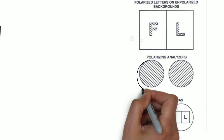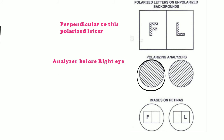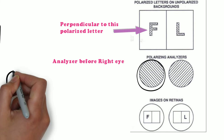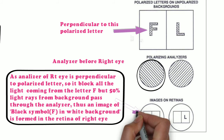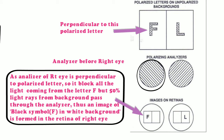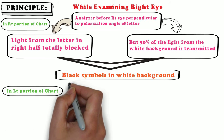Here in this figure, the analyzer before the right eye is perpendicular to the polarized letter F. Since the analyzer of the right eye is perpendicular to the polarized letter, it blocks all the light coming from the letter F, but 50 percent of light rays from the background pass through the analyzer. Thus an image of a black symbol F in white background is formed on the retina of the right eye.